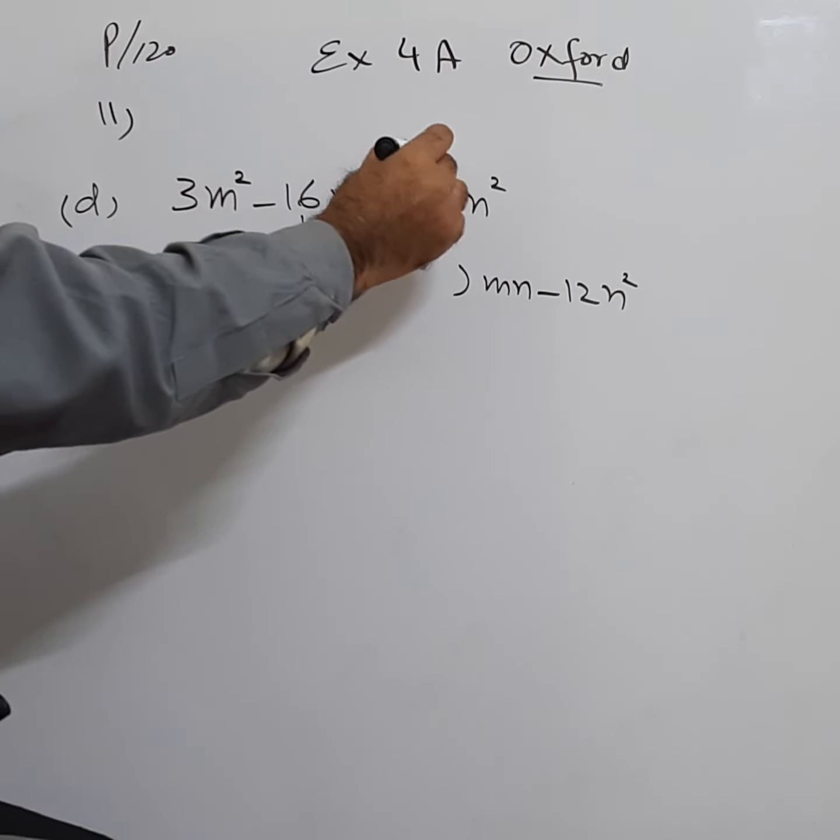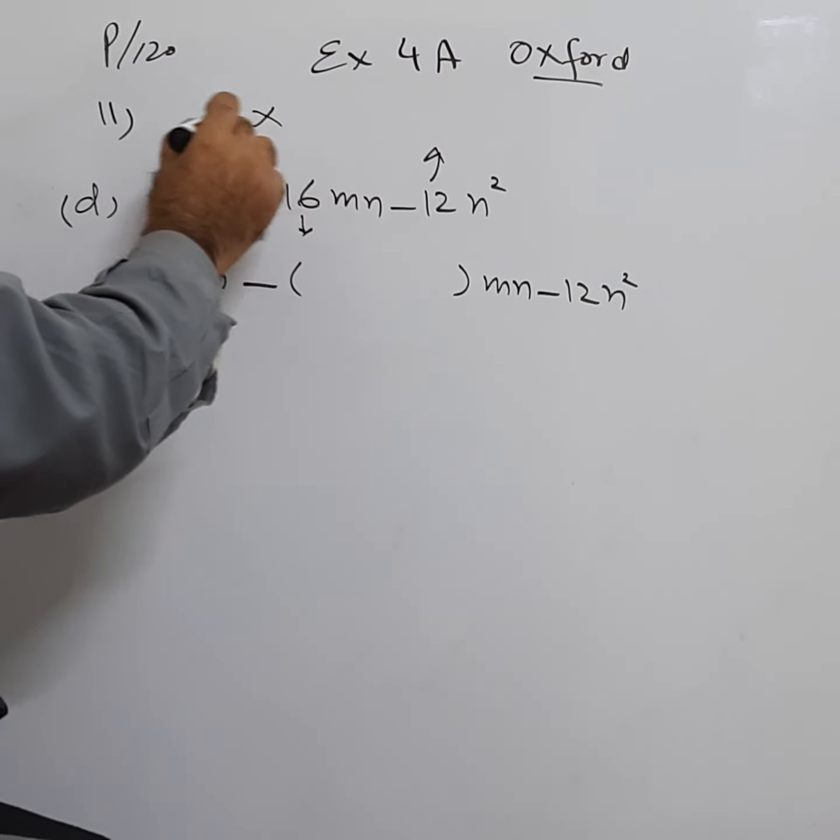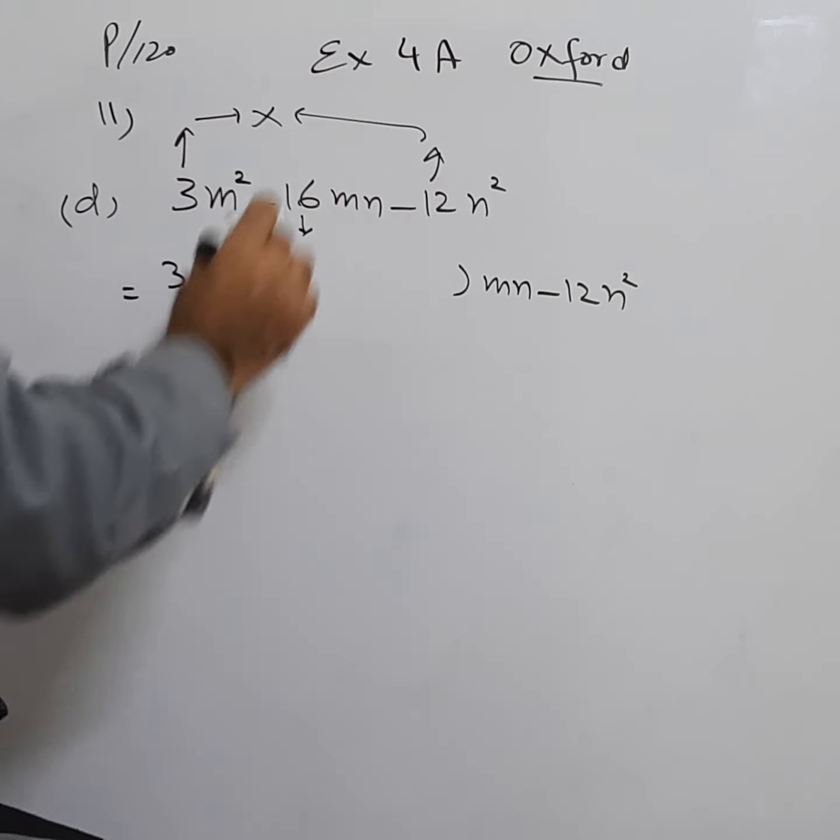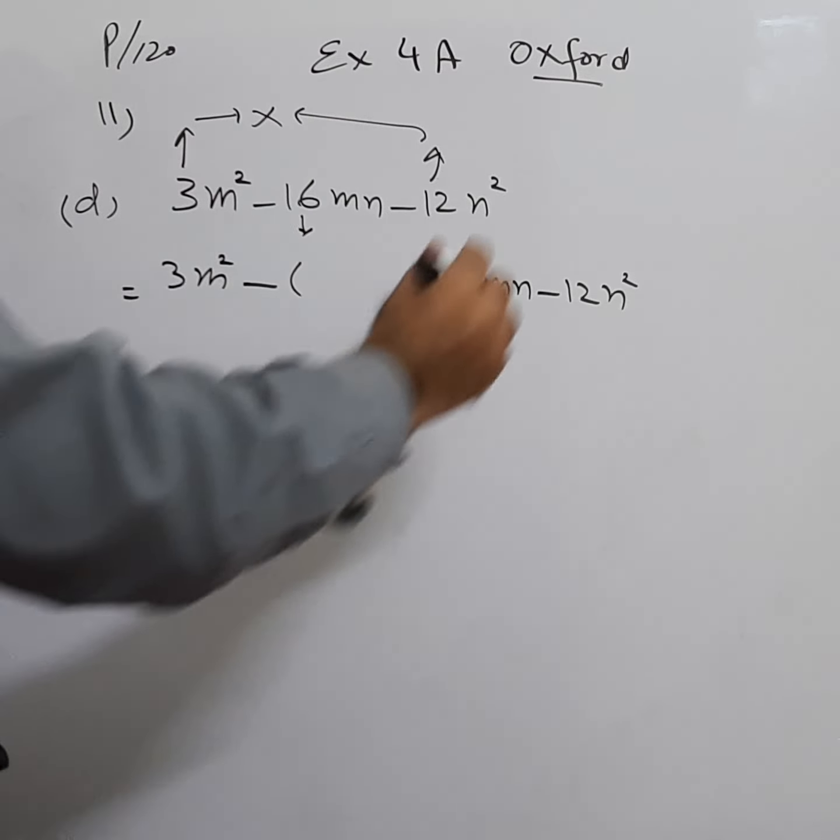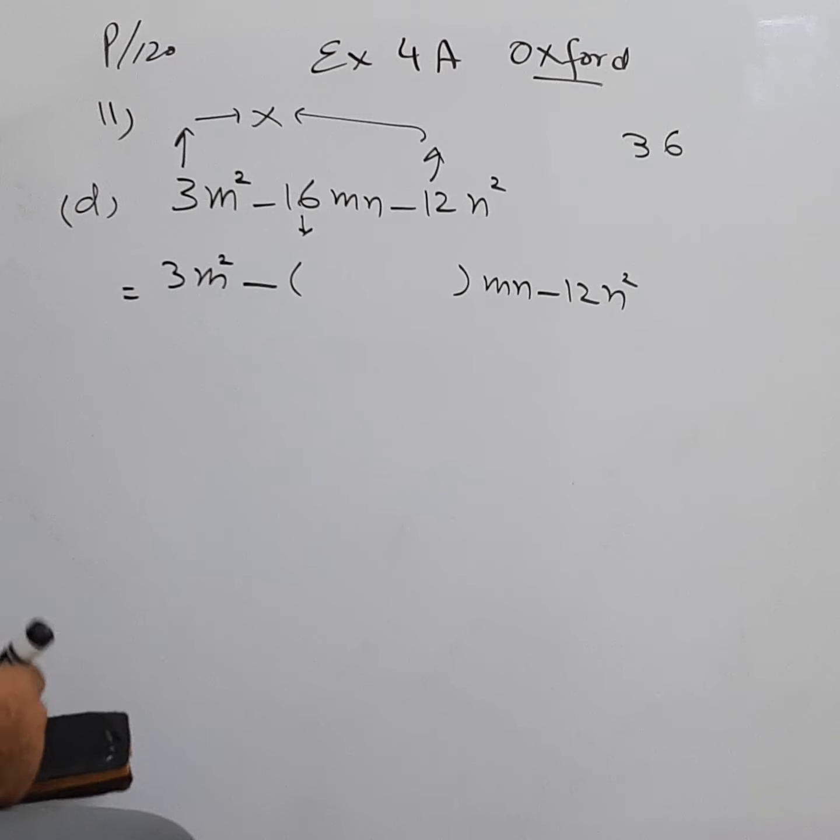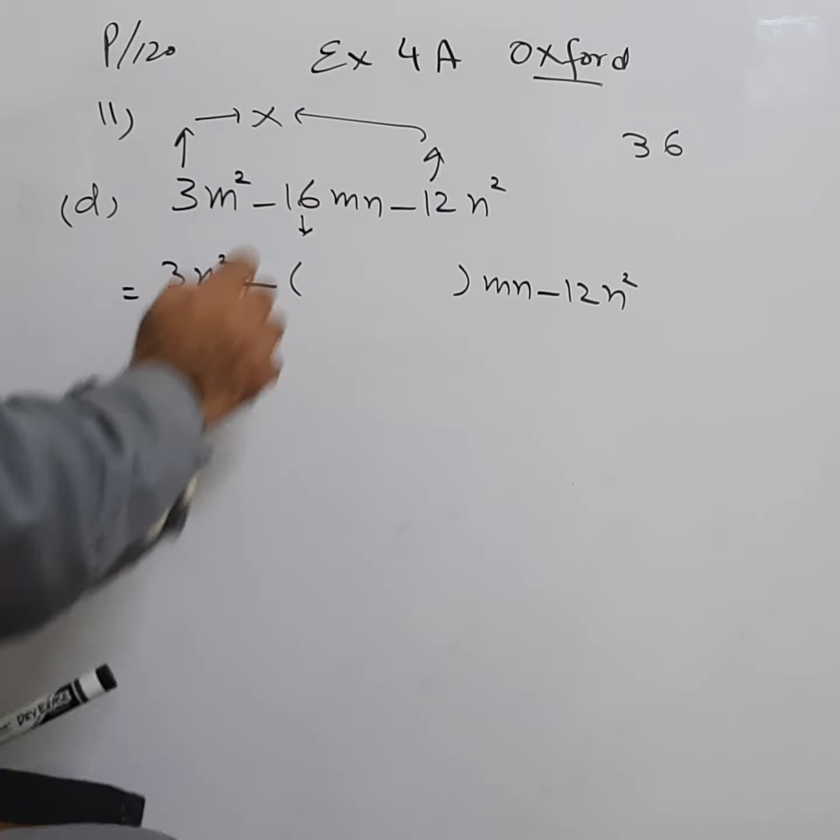What to do is this 12 will be multiplied with the 3. 12 times 3 is 36, so we need to find out the factors of 36 so that if either we add or subtract those factors we get 16.